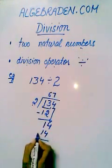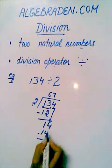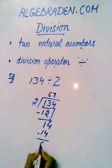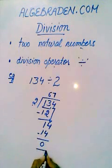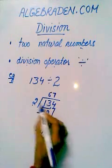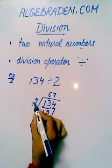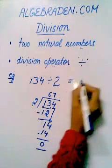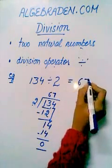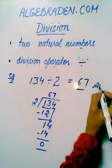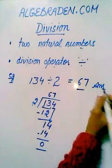Now subtract 14 from 14, which gives us 0 as remainder. So 134 is completely divisible by 2 at 67. So 67 is the answer.